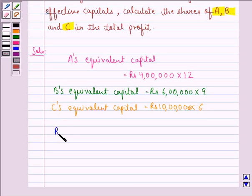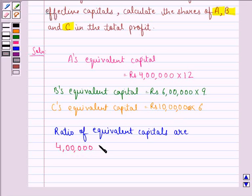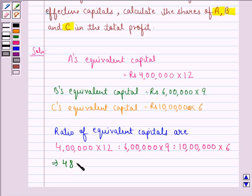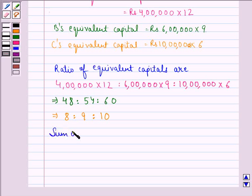So ratio of equivalent capitals are 4 lakh into 12 is to 6 lakhs into 9 is to 10 lakhs into 6. This ratio is same as 48 is to 54 is to 60. This ratio is further same as 8 is to 9 is to 10.